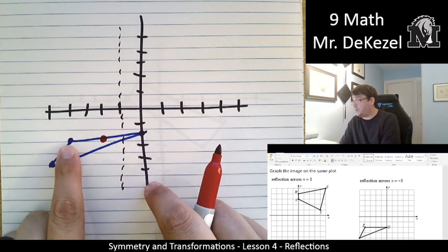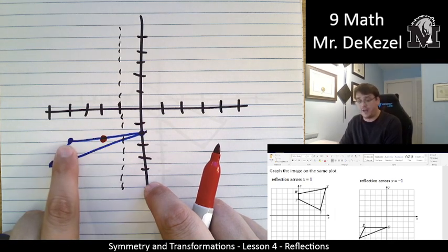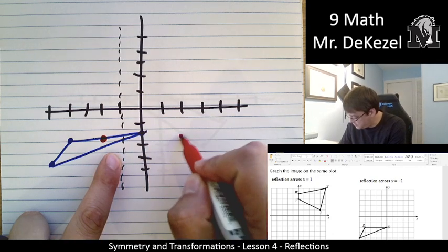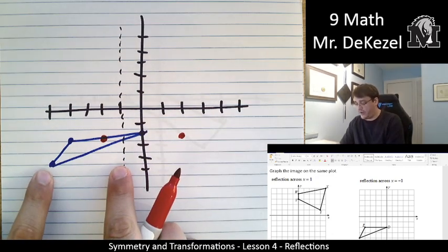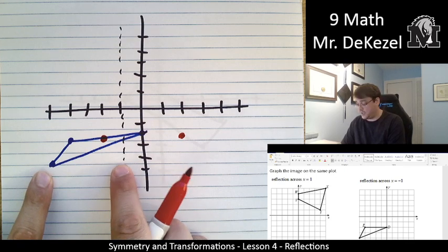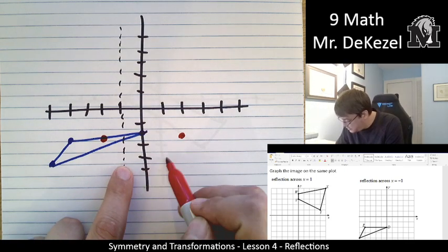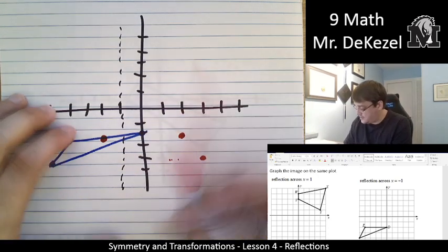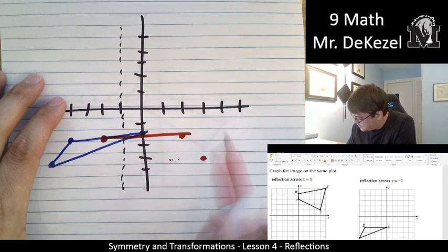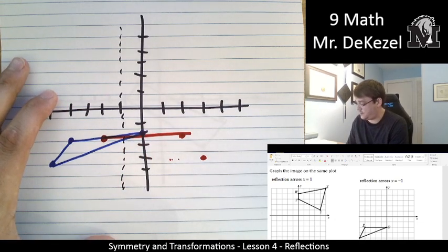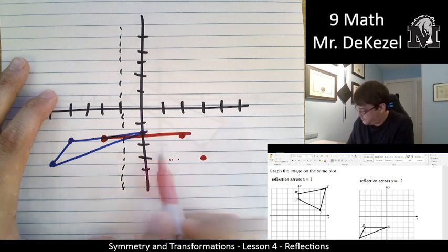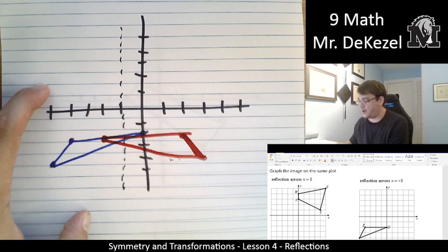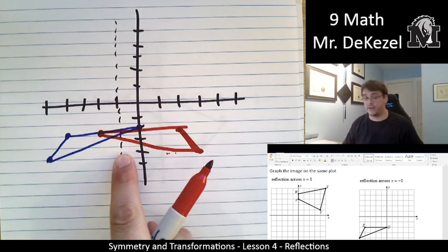This value over here is 1, 2, 3 away from that line on the left, so it's going to become 1, 2, 3 away from the line on the right. This one is four away from the left, so it's going to become 1, 2, 3, 4 over here. We're going to go ahead and connect these, and we should see a triangle. My original drawing is not good. This drawing is better. So we flipped that triangle over this line.